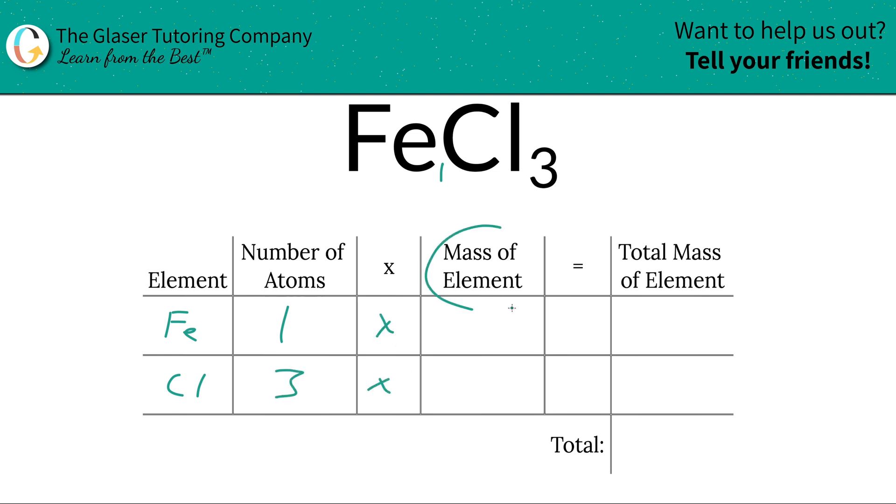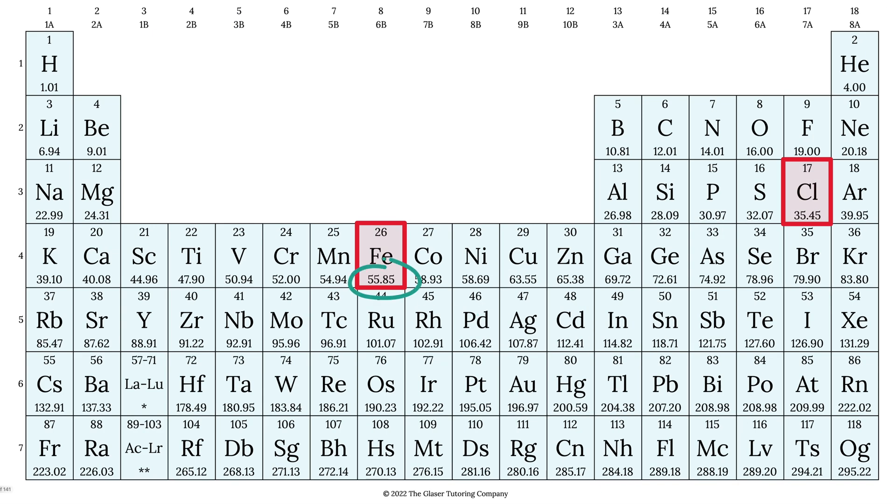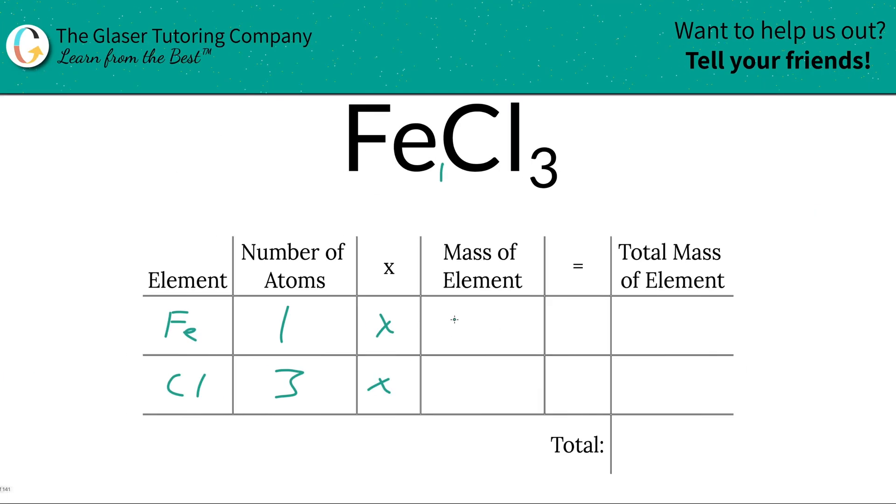Then you're going to take those number of atoms and multiply it by the mass of the element. These masses are found on the periodic table, so let's take a look. Here's iron's mass, 55.85. And here's chlorine, 35.45. So that's what we're going to write in. 55.85. And then 35.45.